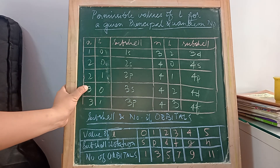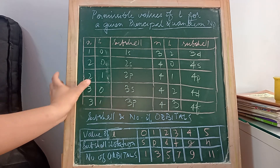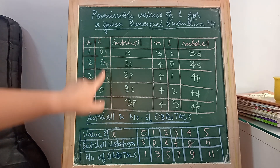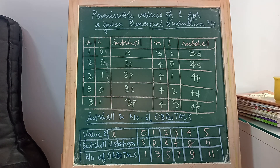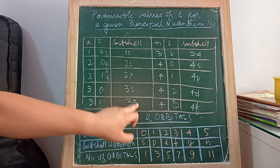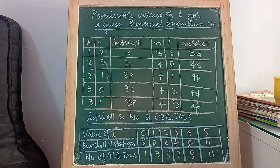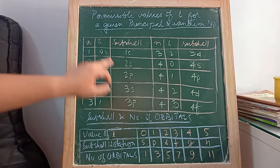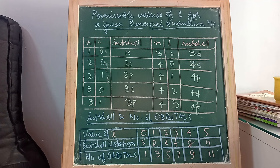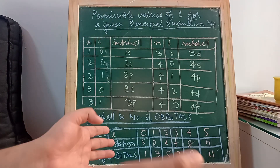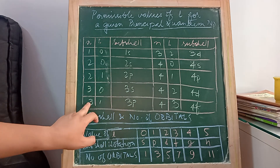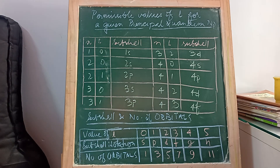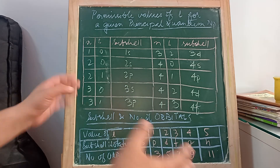If the principal quantum number is 3, the values of L will be 0, 1, and 2. L equal to 0 is represented as s, L equal to 1 means p, and L equal to 2 means d. We use letters to denote the value of L for subshell notation. So the subshells in the third principal shell are 3s, 3p, and 3d.